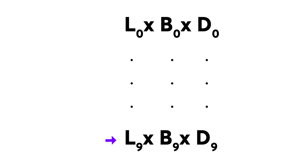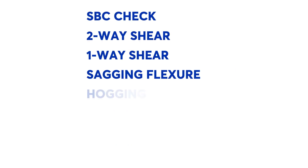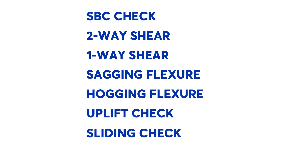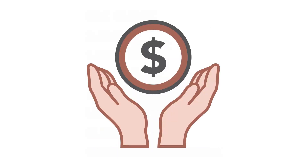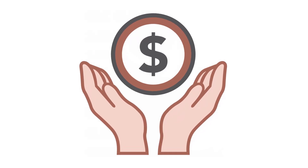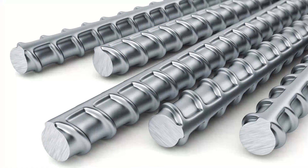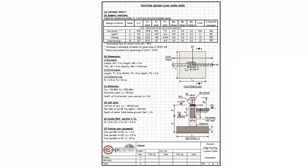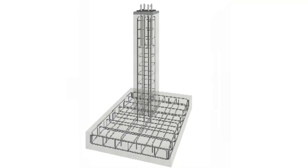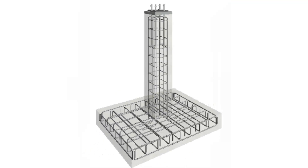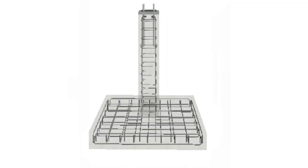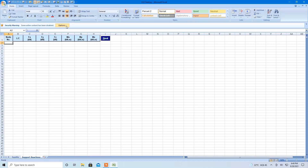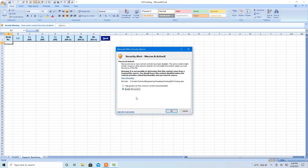Starting with the least footing size, design checks are performed based on design code complying with good engineering practices. For a footing to be considered successful, it must satisfy the required design criteria for all load combinations at all support joints. Cost is then calculated for successful footings using material rates for concrete, rebar, and formwork to arrive at the one with the least cost. Comprehensive calculations are then printed for the least cost footing, completing the footing design. We start by opening this application, which takes us to our first input page for support reactions.